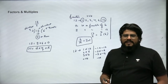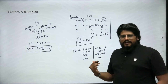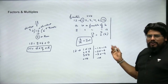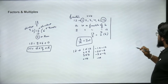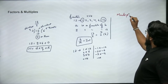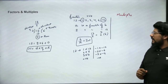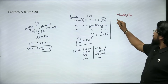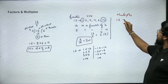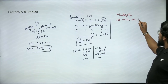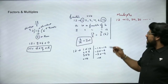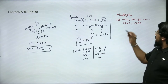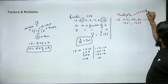Unless specifically asked for positive factors, the number of factors includes negative factors as well. Now, the next concept — a counterpart to factors — is multiples. If 2 is a factor of 12, then 12 is called a multiple of 2. The multiples of 12 are 12, 24, 36, and so on. Multiples are simply a number multiplied by any integer.